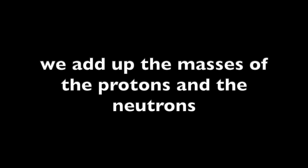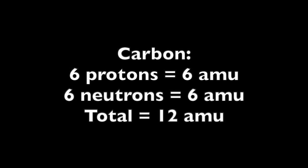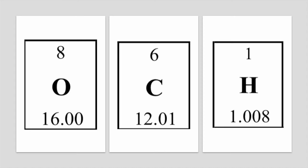The mass of electrons is so small that we can ignore it when we talk about the mass of an atom. If we want to know the atomic mass of a single atom, we add up the masses of the protons and the neutrons. For example, to calculate the approximate mass of a carbon atom, we add up 6 protons and 6 neutrons and get an atomic mass of 12 atomic mass units.